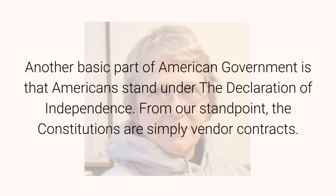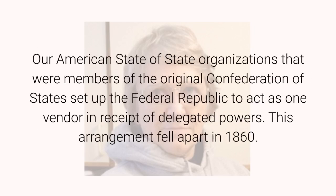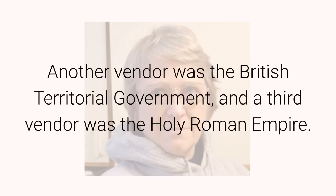Another basic part of American government is that Americans stand under the Declaration of Independence. From our standpoint, the constitutions are simply vendor contracts. Our American state of state organizations that were members of the original Confederation of States set up the Federal Republic to act as one vendor in receipt of delegated powers. This arrangement fell apart in 1860. Another vendor was the British territorial government, and a third vendor was the Holy Roman Empire.